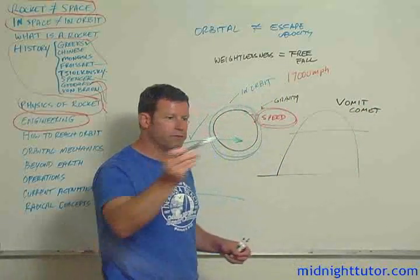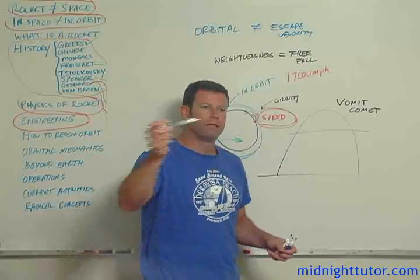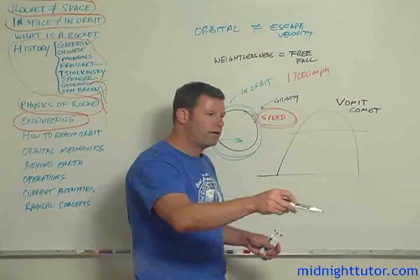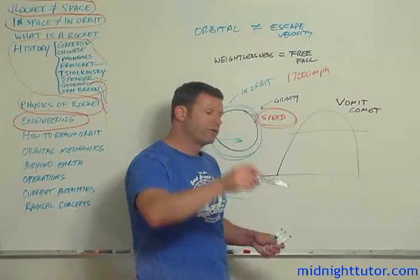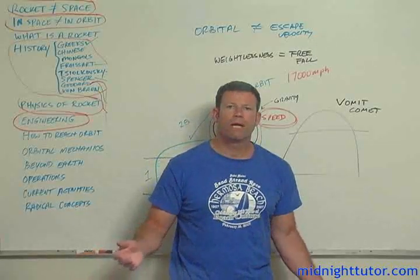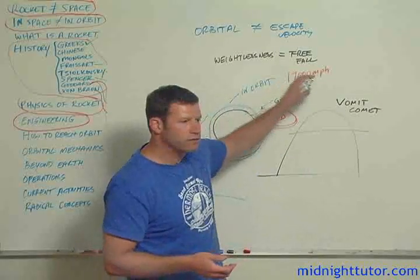The so-called vomit comet. And NASA runs a trajectory using a KC-135, I think. That doesn't even go outside the atmosphere, but they run this parabolic profile. At the top, relative to the vehicle you're in, you're weightless. You can be floating because you're in a free fall state.